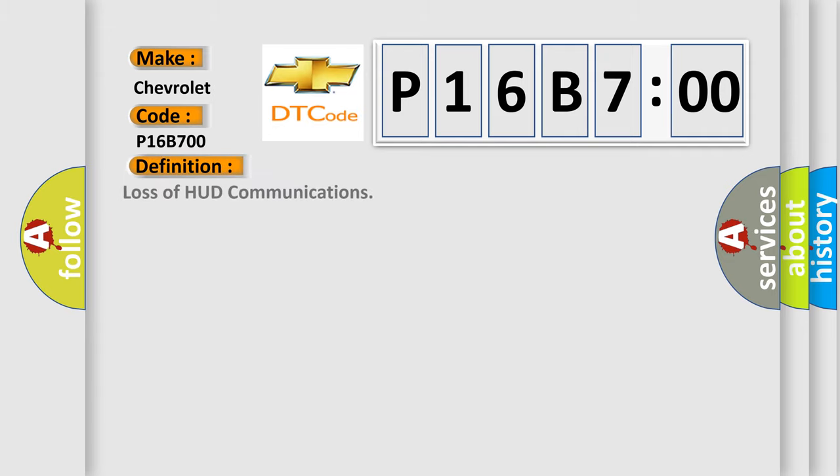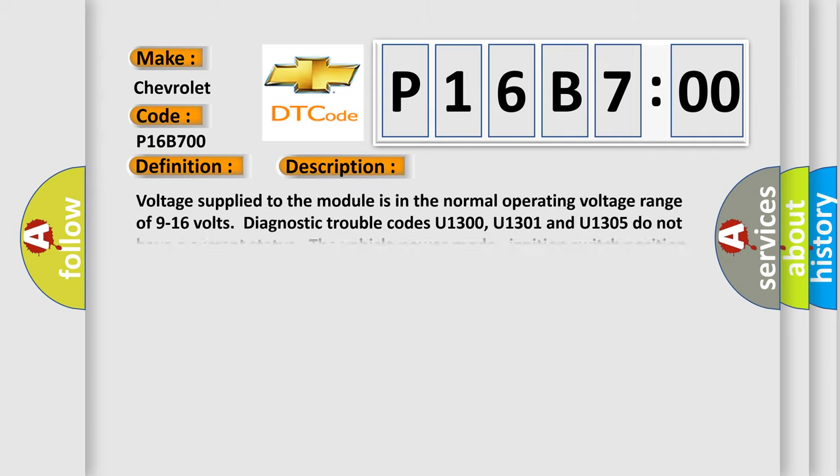The basic definition is Loss of HUD communications. And now this is a short description of this DTC code.